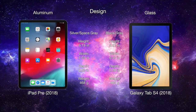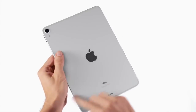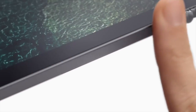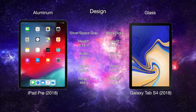Now let's talk about the design. The iPad Pro comes in two colors, silver and space gray. The Galaxy Tab also comes in two color choices of gray and black. The body of the iPad Pro is made up of aluminum while the Galaxy Tablet has a glass body. The iPad Pro is slightly shorter than the Galaxy Tablet yet still accommodating a 0.5-inch larger display. The iPad Pro is also wider, slightly thinner, and weighs less than the Tab S4.